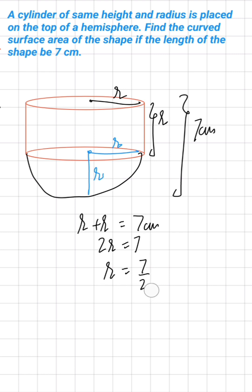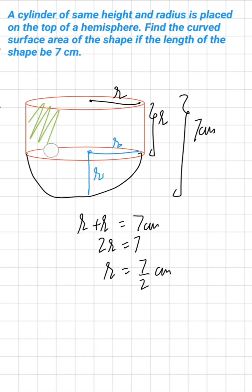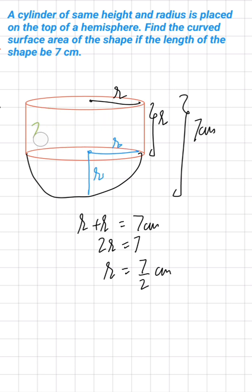Therefore R = 7/2 centimeters. We now know the value of R, and the height of the cylinder is also 7/2 centimeters. The curved surface area of the cylinder is found with the formula 2πRH.